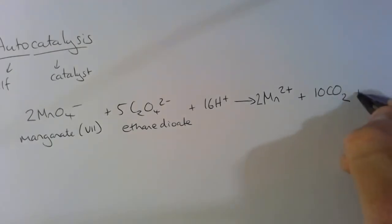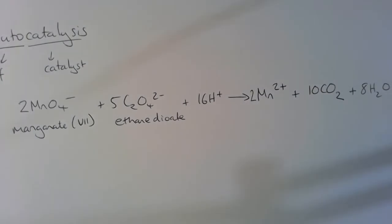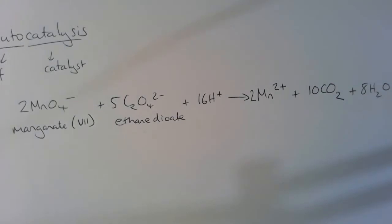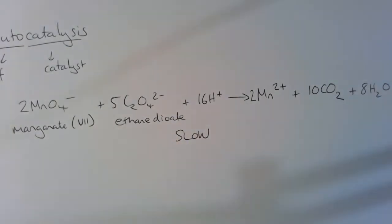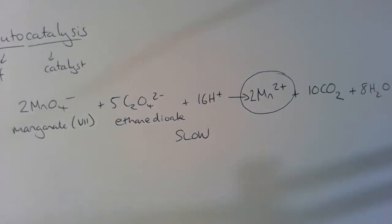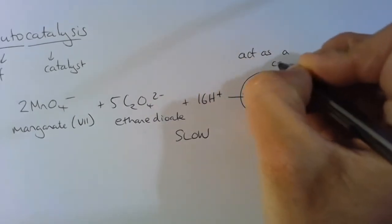In order to deal with the hydrogens and the oxygens in the manganate ion, we'll need 8 water molecules. So this is a reaction that we need to know, and it's a slow reaction even at 60 degrees Celsius. It starts very, very slow, but the reaction produces Mn²⁺ ions, and these Mn²⁺ ions can act as a catalyst.